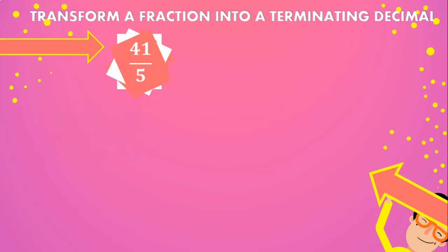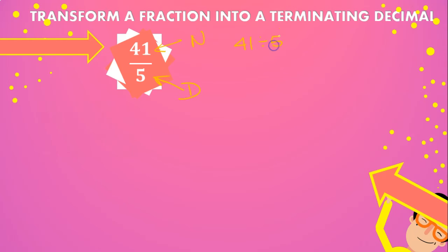The second problem is 41 divided by 5. We identify the numerator, we identify the denominator, and we begin dividing. So the numerator, 41, divided by the denominator, which is 5, gives us 41 divided by 5 — that's 8. 8 times 5 is 40. We subtract and that gives us 1.